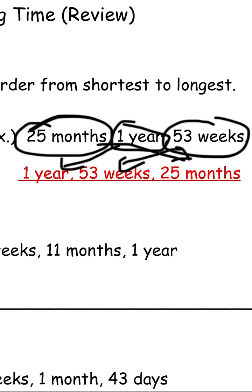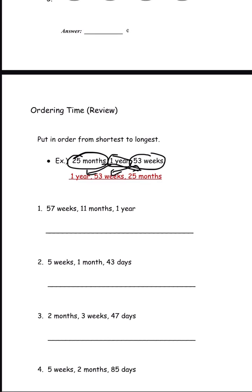25 months is much more than one year because 24 months is going to be two years, so 25 months would be the longest. The answer should be: one year, then 53 weeks, then 25 months.